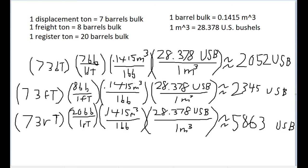So here I have done a conversion from 73 tons in all three iterations of the version of tons into U.S. bushels. So for 73 displacement tons, I abbreviated that as DT. That's seven barrels bulk per displacement ton. Then did a conversion from one barrel bulk to 0.1415 cubic meters. Then did a conversion from a cubic meter into 28.378 U.S. bushels.